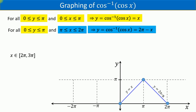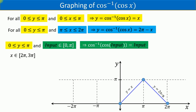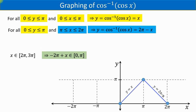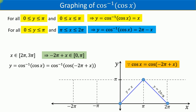When x belongs to the closed interval 2 pi to 3 pi, we use the same technique to bring the manipulated value of x into the closed interval 0 to pi. Upon adding negative 2 pi to this interval, we get negative 2 pi plus x, which belongs to the closed interval 0 to pi. Now we can write cos inverse of cos x equals cos inverse of cos(negative 2 pi plus x), because cos x equals cos(negative 2 pi plus x). Furthermore, y equals negative 2 pi plus x for all x in the closed interval 2 pi to 3 pi, and we can draw the graph of this line for this interval.